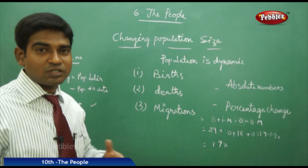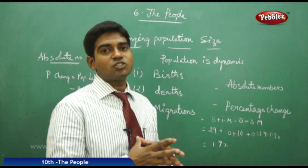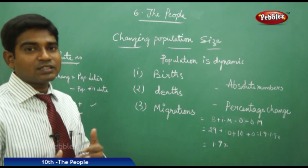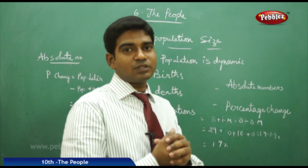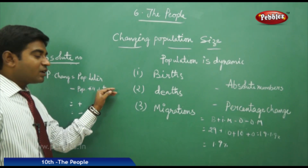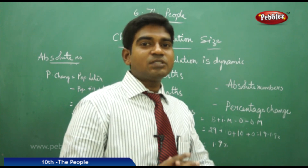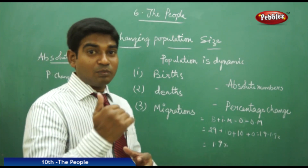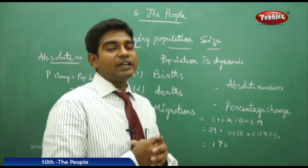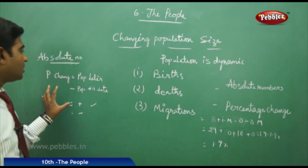For example, using the 2011 census minus the 2001 census: if we have 121 crores minus 100 crores, we get positive 21 crores, meaning the population has increased. If calculated in reverse, we get minus 21 crores, meaning the population has decreased. This gives us the absolute figure — not a percentage — and this is called absolute numbers or the population dynamics change.